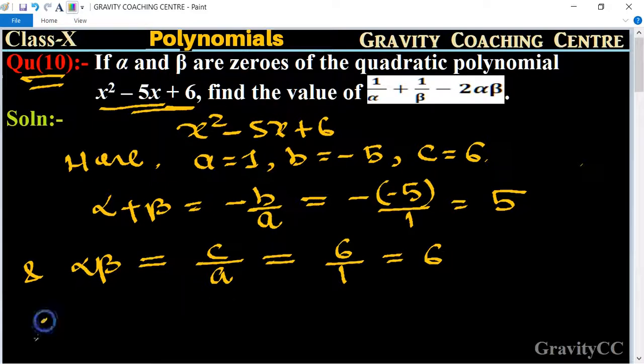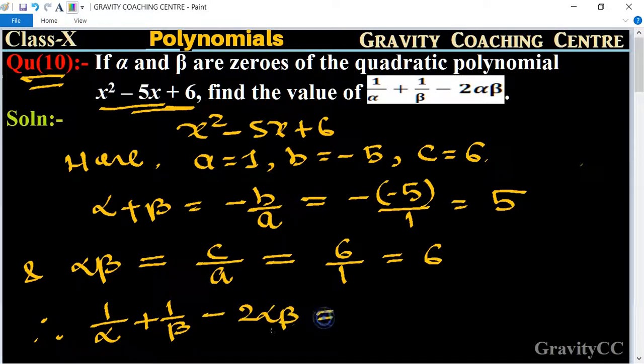Therefore, for 1/α + 1/β - 2αβ, we now take the common denominator.